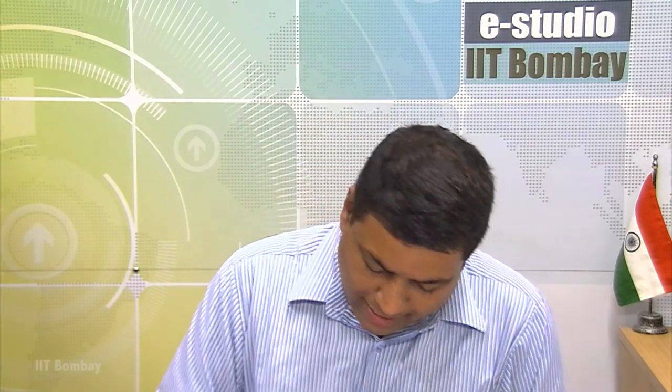This will be a negative quantity which means work is done on the system and it will turn out as minus 6.668 kilowatt.